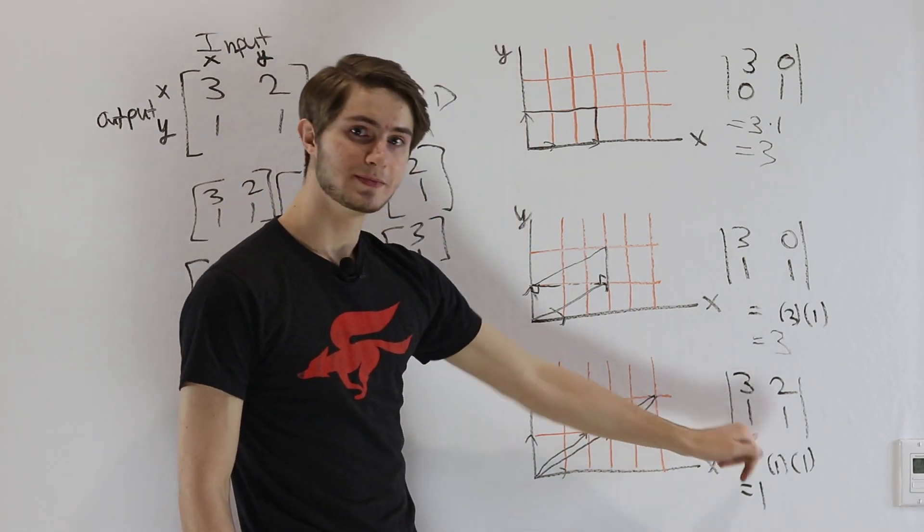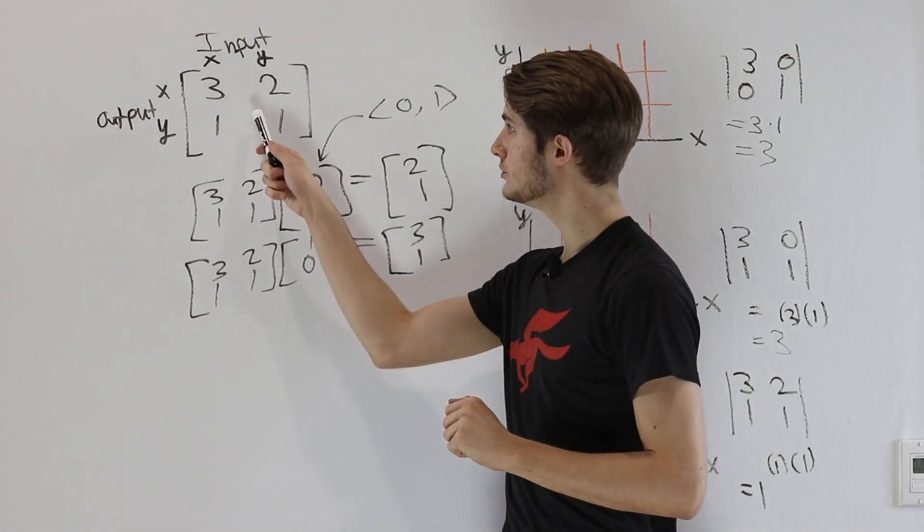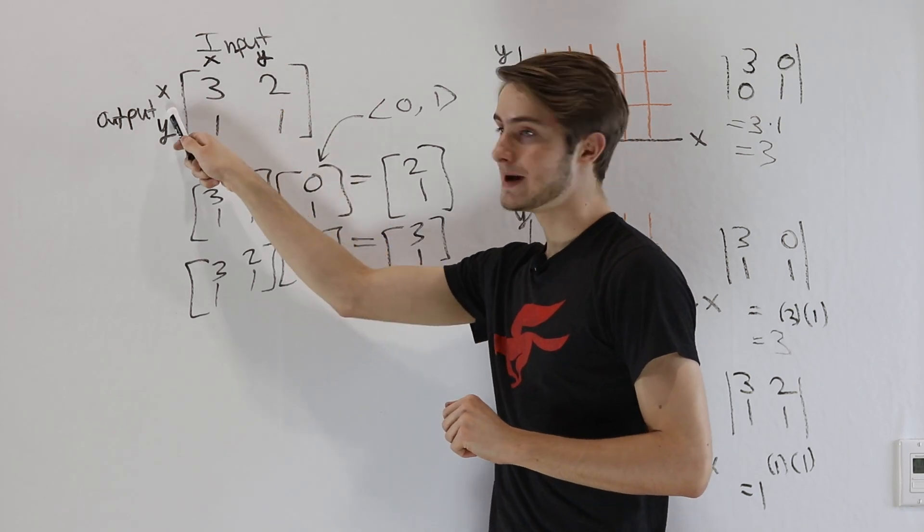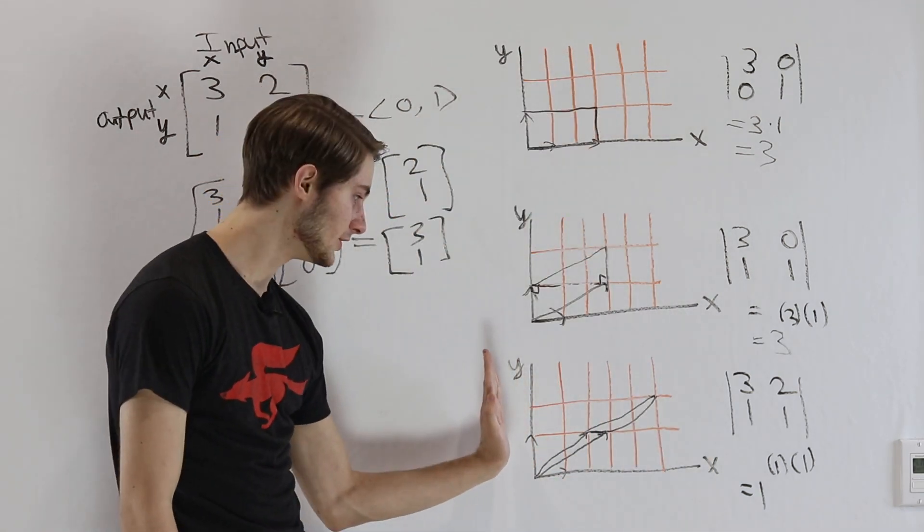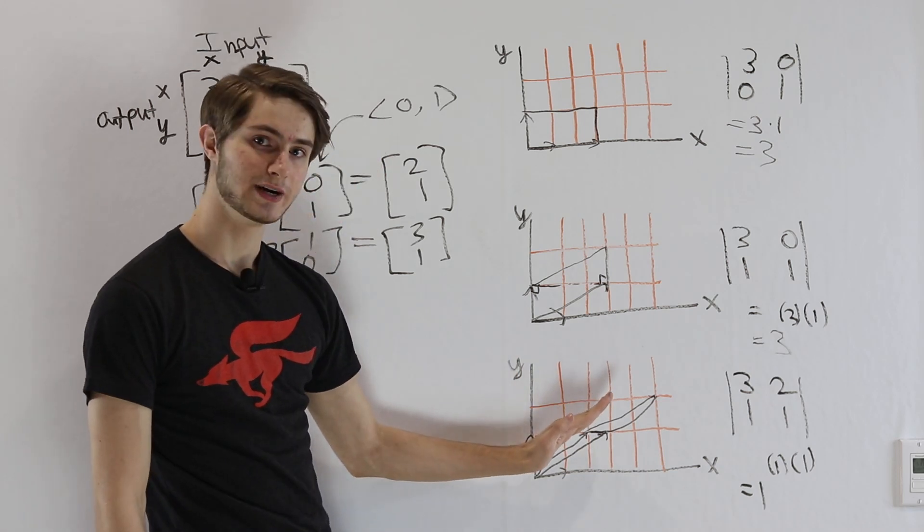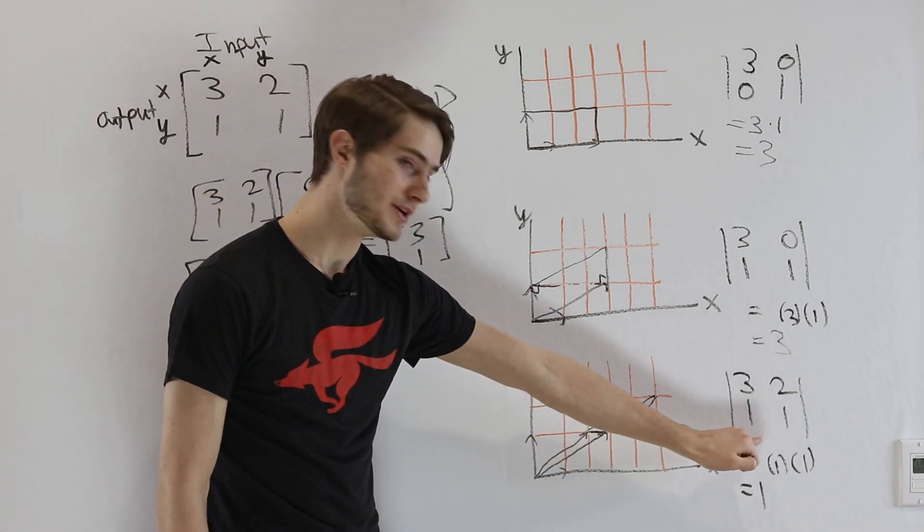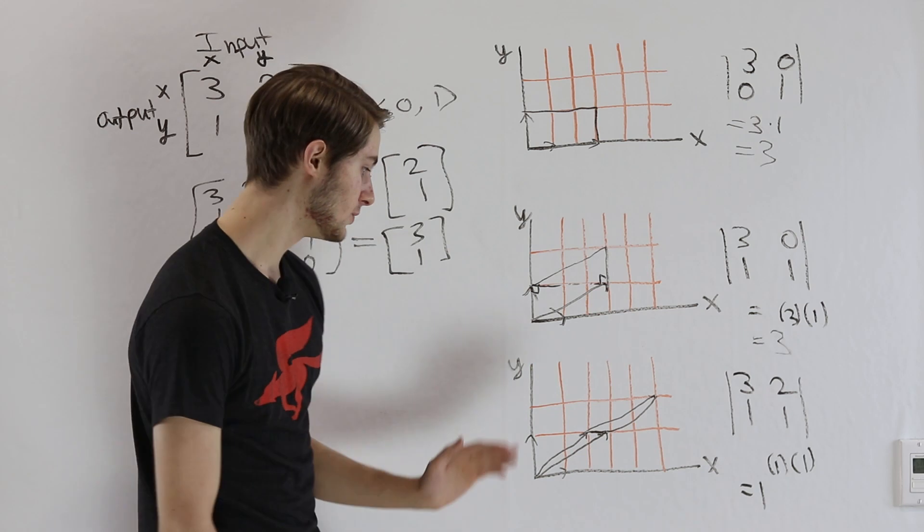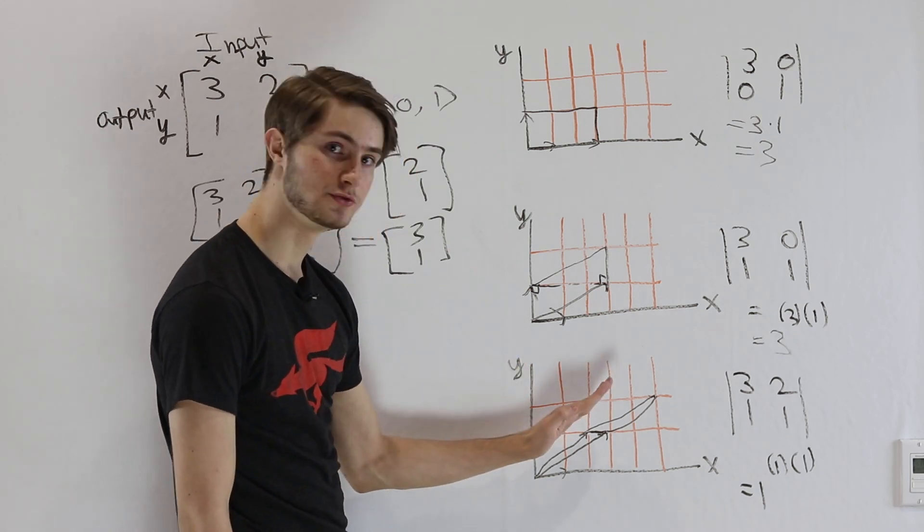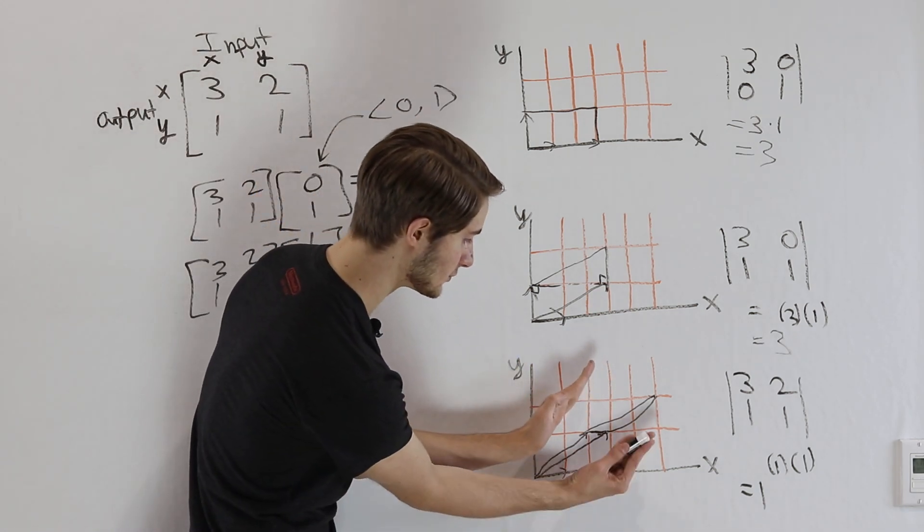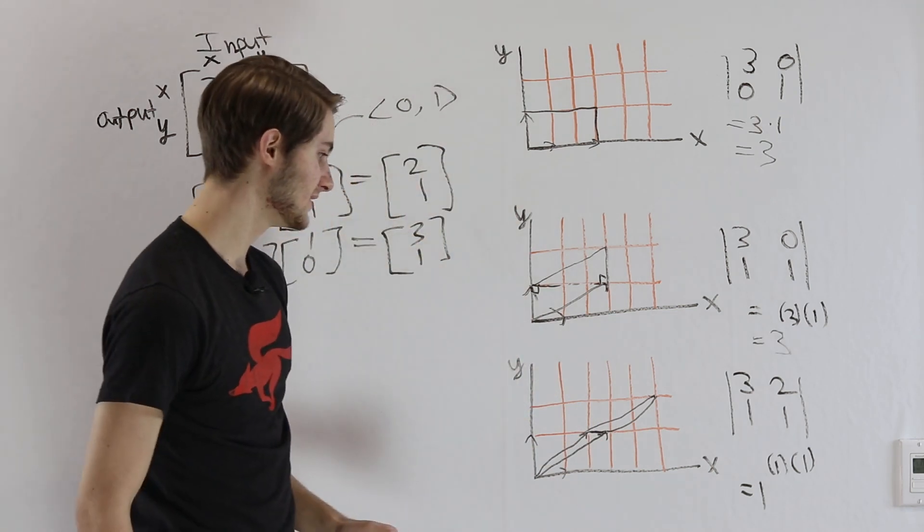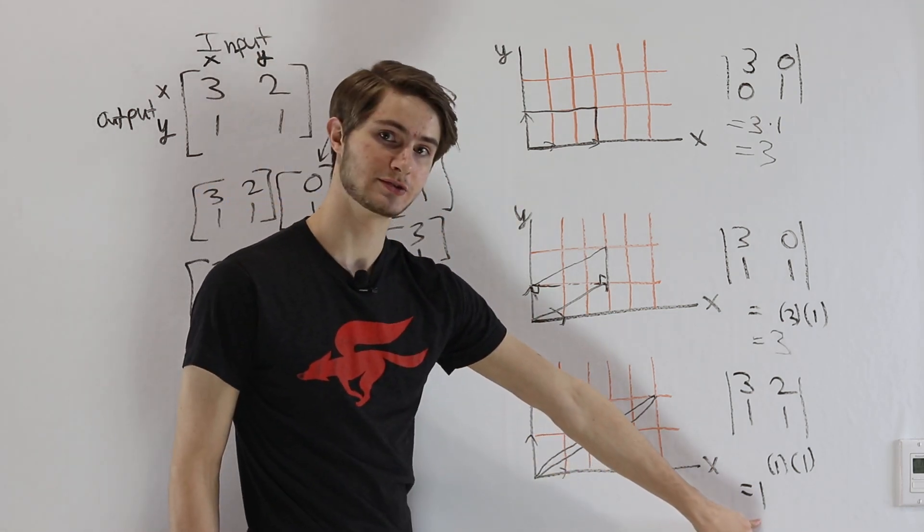But this 2 and this 1 are something different. The 2 is how much y gets mapped to x. That's this vector starting vertical and moving towards the x direction. And this 1 here is how much x gets mapped to y. So just like y has moved toward the x, x has moved toward the y. That's that book closing effect.